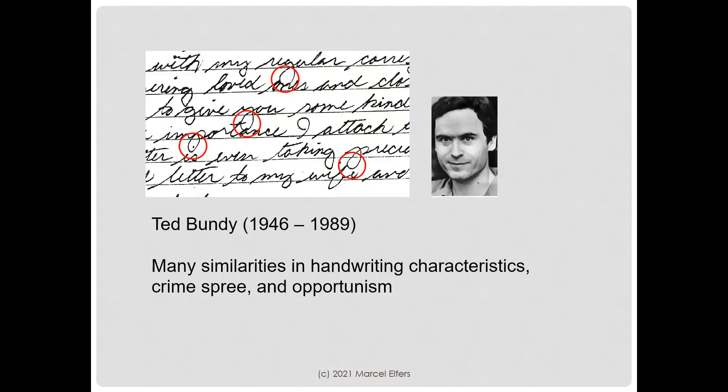He was not alone in that characteristic. Ted Bundy also had an invasive lower zone, and although the handwriting looks significantly different, we do see significant similarities in handwriting characteristics — like the invasive lower zone. Ted Bundy was also highly opportunistic. Handwriting is a behavior, and therefore look at it like a behavior.